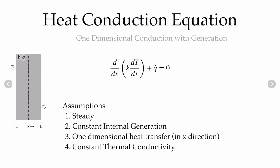Since it's one-dimensional, we can turn our partial derivatives into ordinary derivatives. Using assumption 4, we extract the thermal conductivity from inside the derivative operator and divide through. Our final starting point is a second-order ordinary differential equation: the second derivative of temperature with respect to x, plus the volumetric generation divided by the thermal conductivity, equals 0.